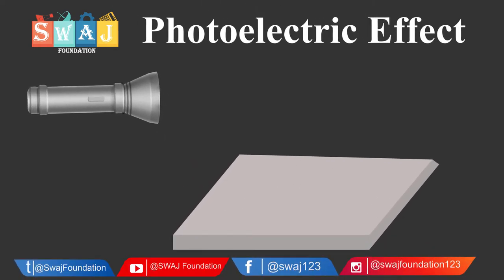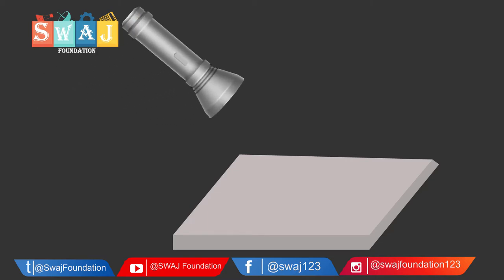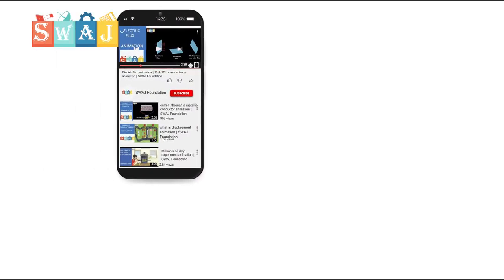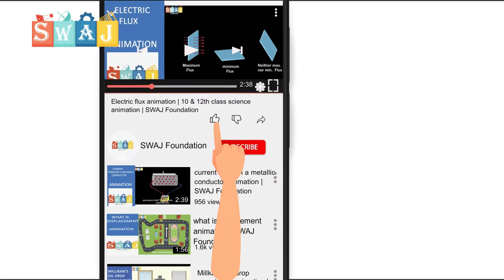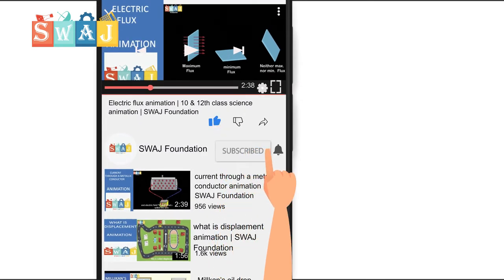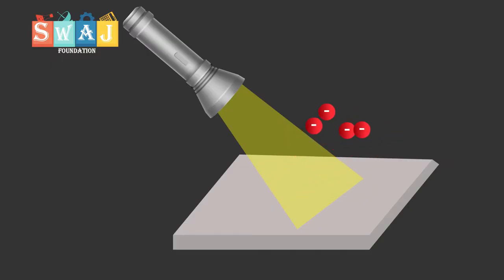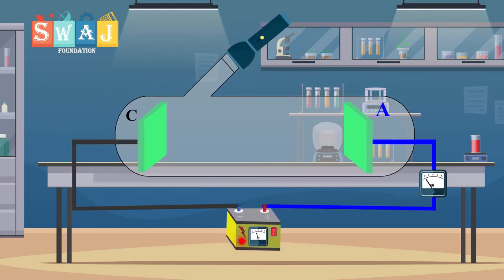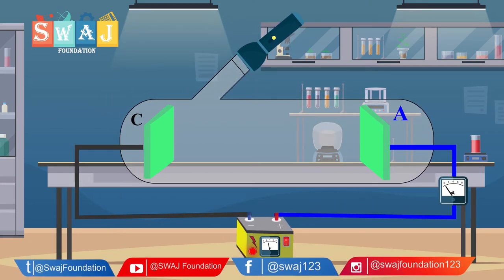The photoelectric effect is the emission of electrons from a metal surface when exposed to light of suitable frequency. The emitted electrons are known as photoelectrons. The photoelectric effect is demonstrated by this apparatus: an evacuated glass tube contains two electrodes.